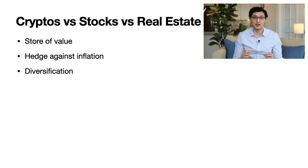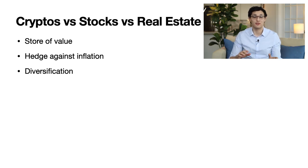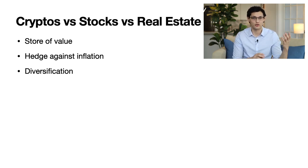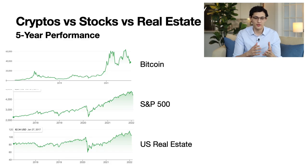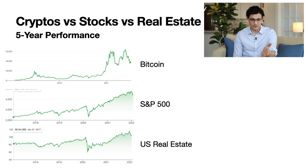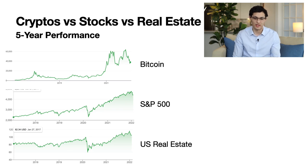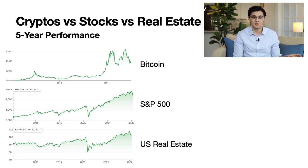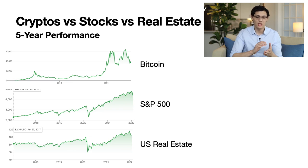The big benefit of investing in cryptos versus stocks or real estate isn't as a replacement for those other investments, but instead as a way to diversify your assets across one additional asset class — basically to de-correlate the prices of cryptocurrency, stocks, and real estate. Looking at a chart of the five-year performance of Bitcoin, the S&P 500, and US real estate, there is some general correlation between all three — the S&P 500 dropped at the same time as Bitcoin and rose at the same time. But the big difference is that Bitcoin has been much more volatile over that same period.